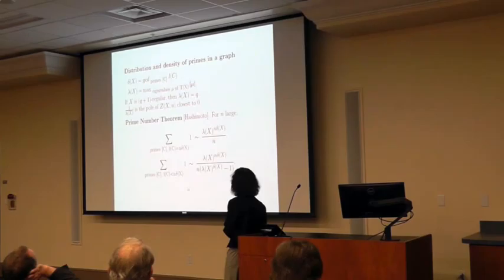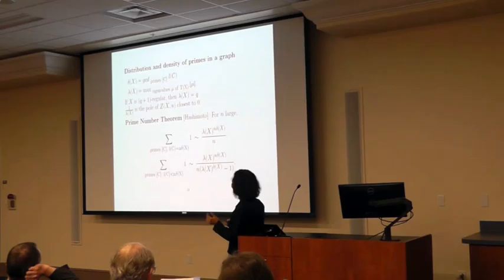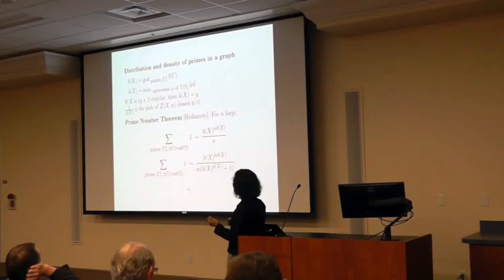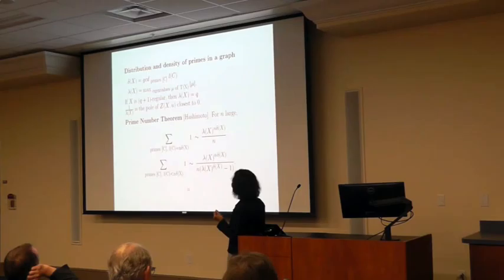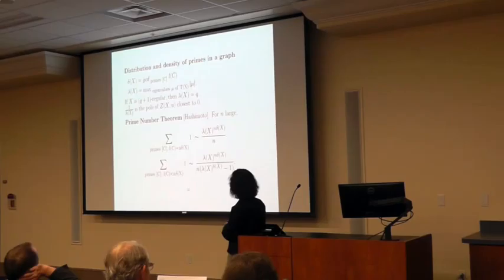Next I want to talk about the distribution and density of primes in the graph. There are two relevant quantities. The first is that we look at the lengths of the primes, and their GCD — we call that δ. Each prime will have a length that is an integer multiple of δ. The second quantity comes from the edge adjacency matrix T: we look at its eigenvalues by absolute value and take the maximum, called λ_X. Then 1/λ_X is the pole of the zeta function closest to the origin. In fact, λ_X is itself an eigenvalue of T.